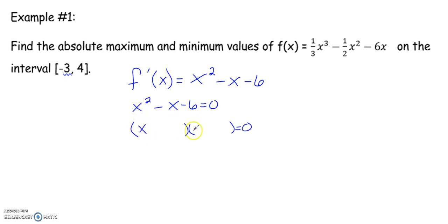x squared can be broken up to x and x. And then what times what gives us negative 6 when I subtract to get negative 1? It is minus 3 and plus 2. So x equals positive 3 and negative 2.